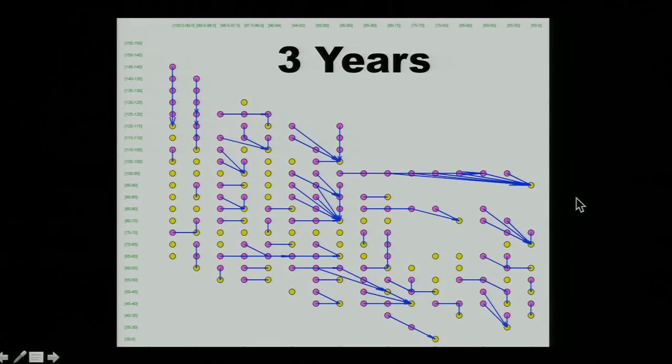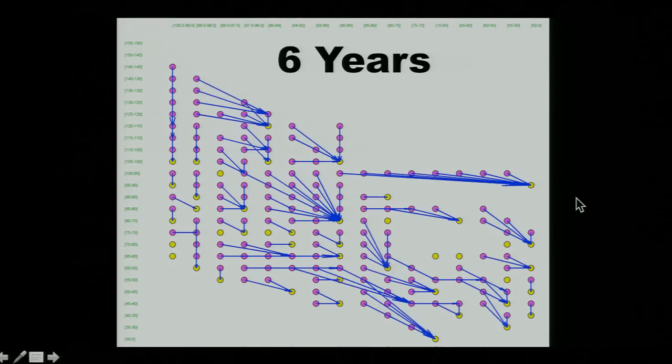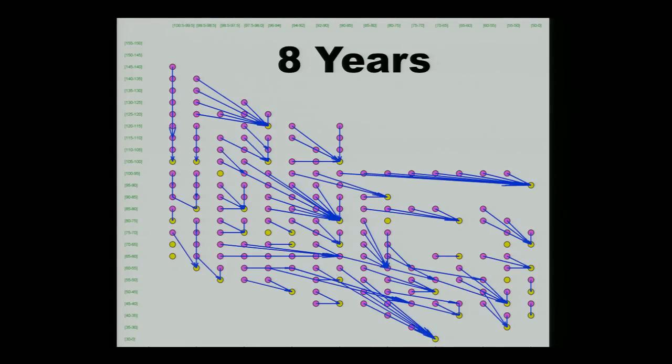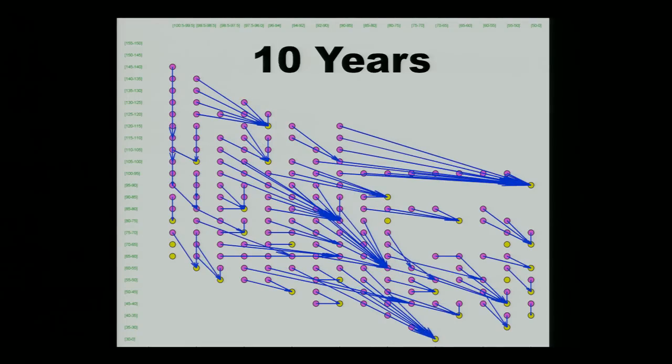We can also predict what the change in state will be over time. So what you're seeing is a state change map over a 10-year period, showing you from what state a person is to where they're likely to end up. And in fact, in this case, it's not where they're likely to end up. It's actually where they did end up.